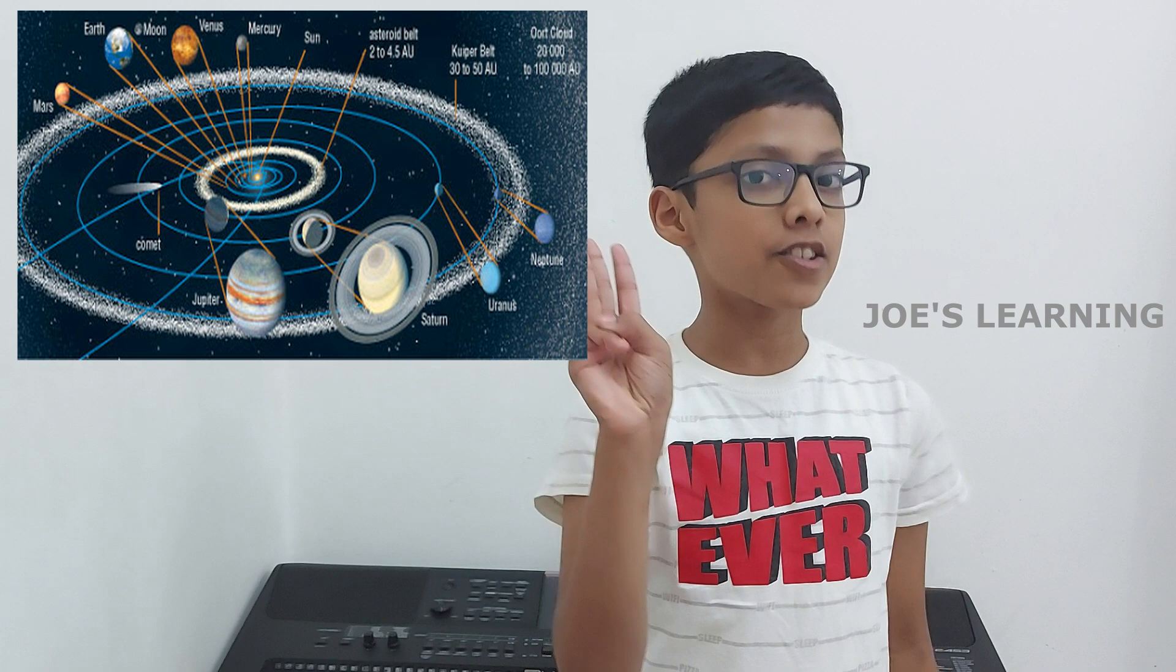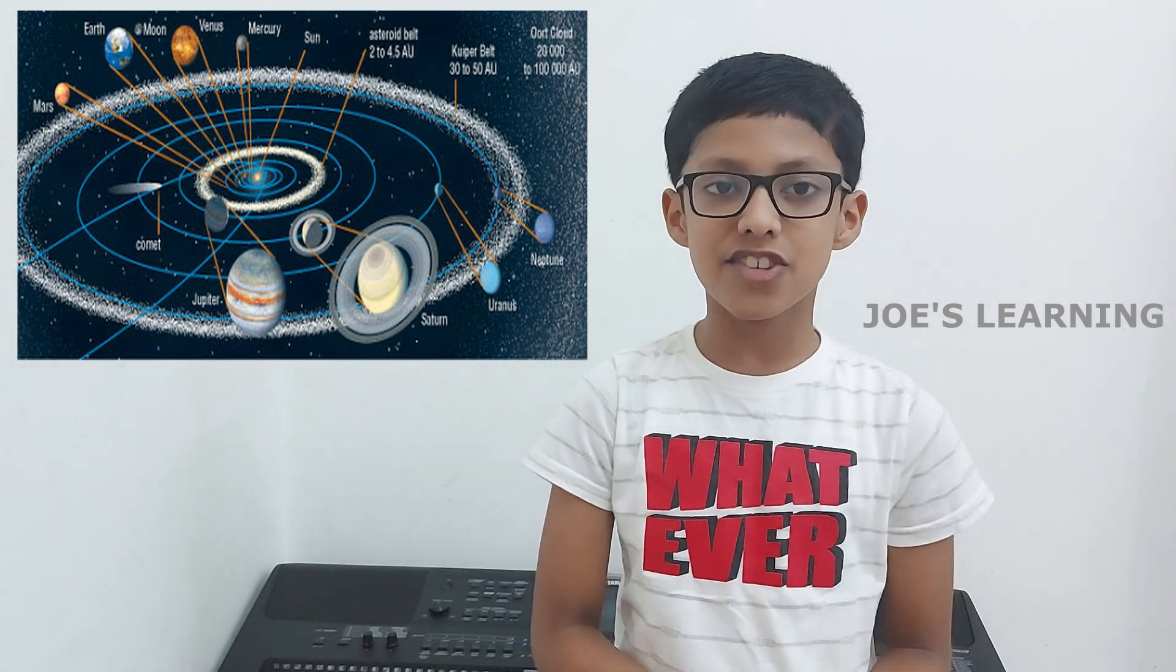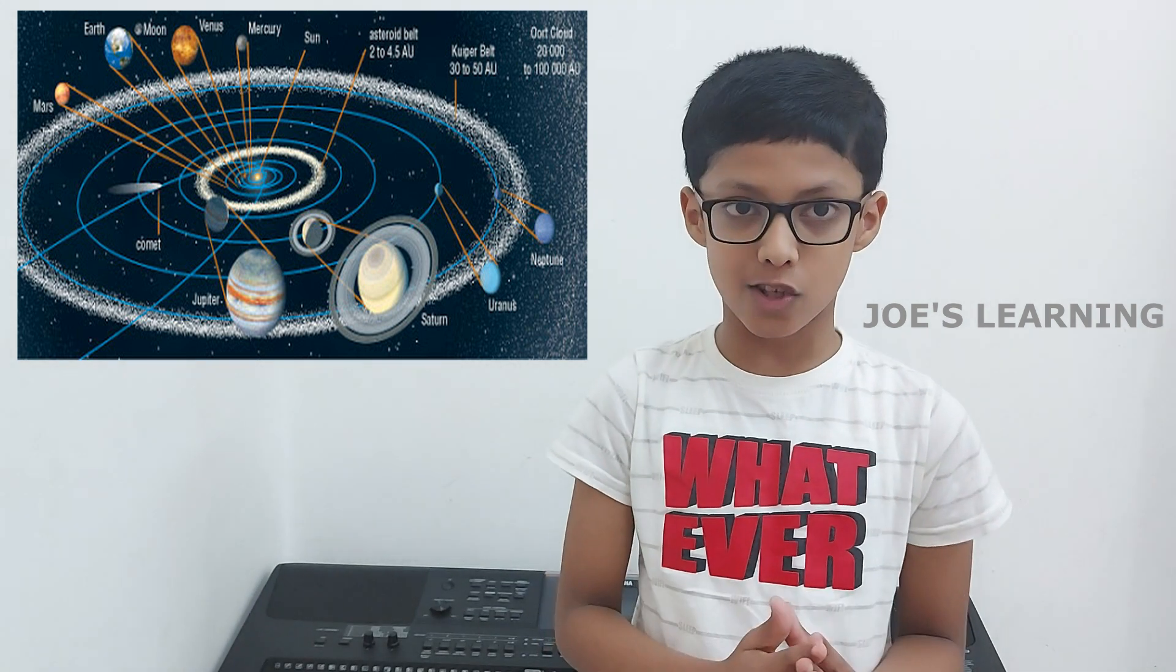While the remaining four planets - Neptune and the three dwarf planets Pluto, Eris, and Ceres - can only be seen through a telescope.